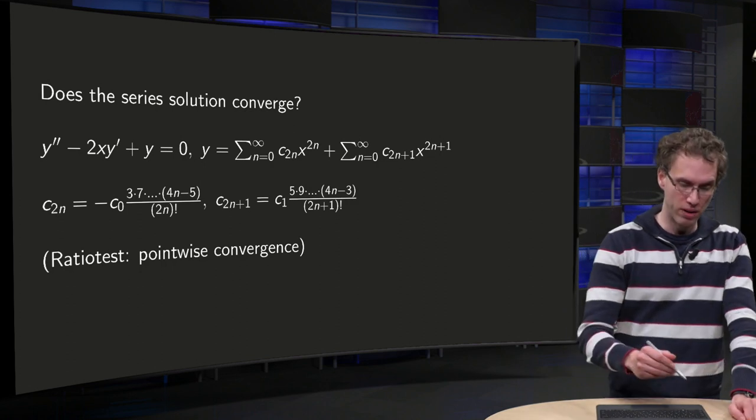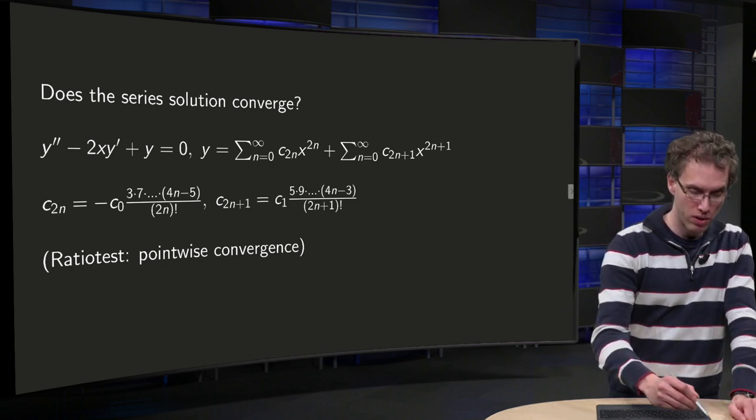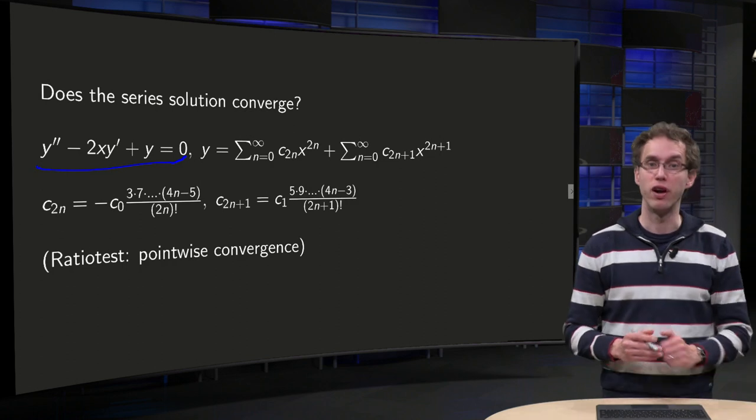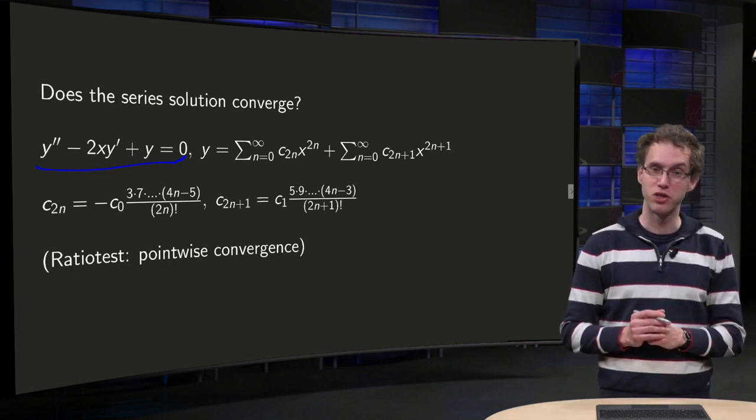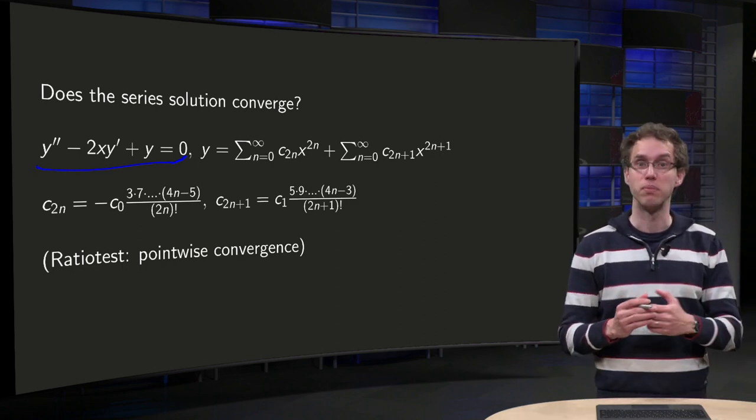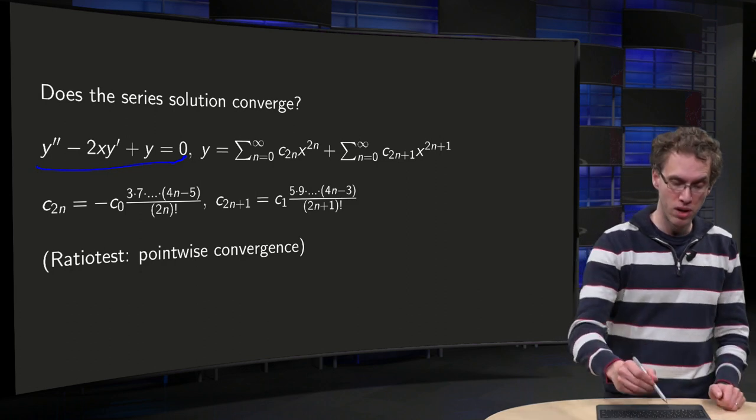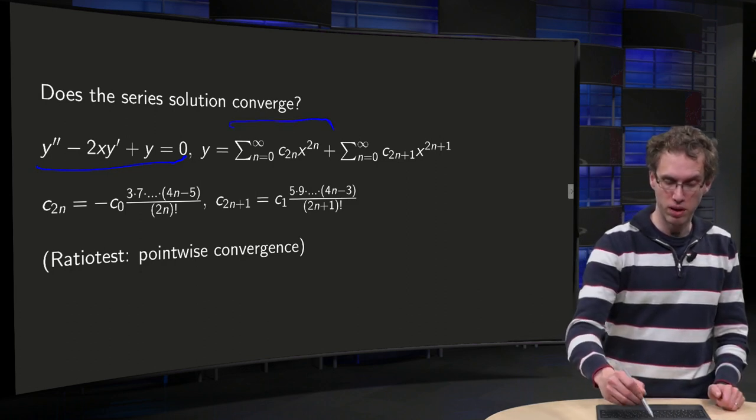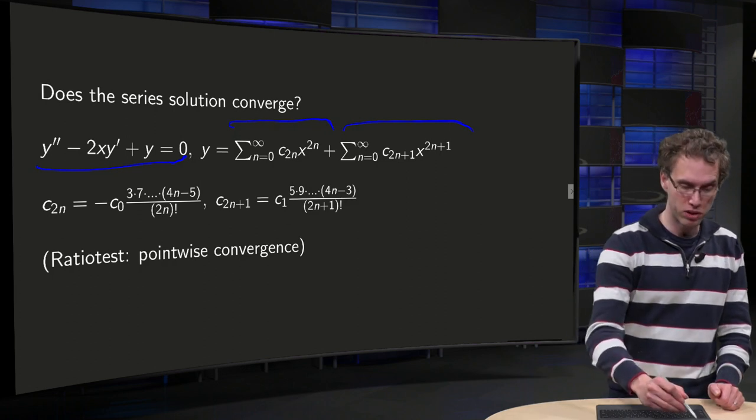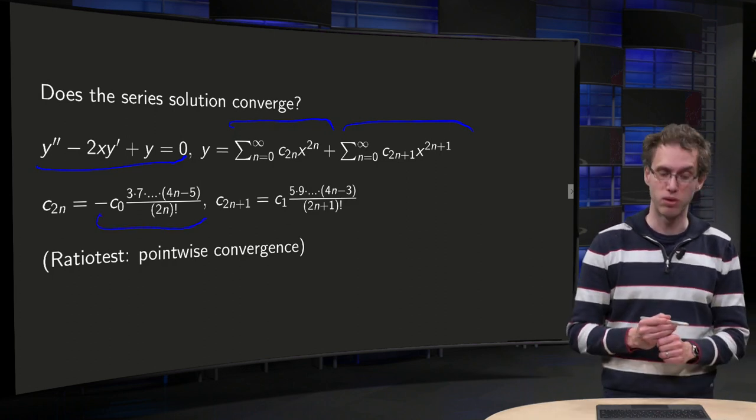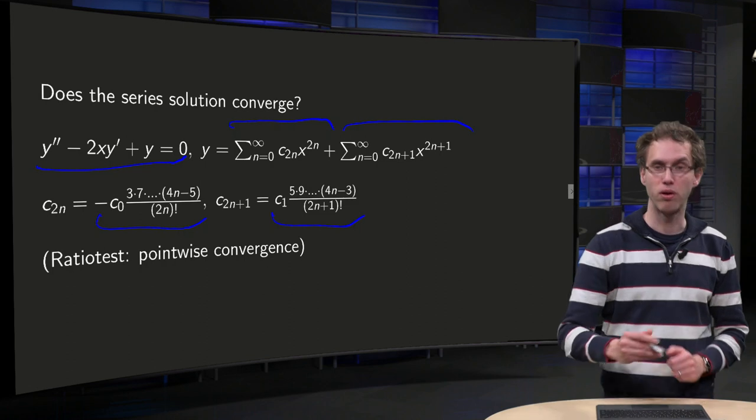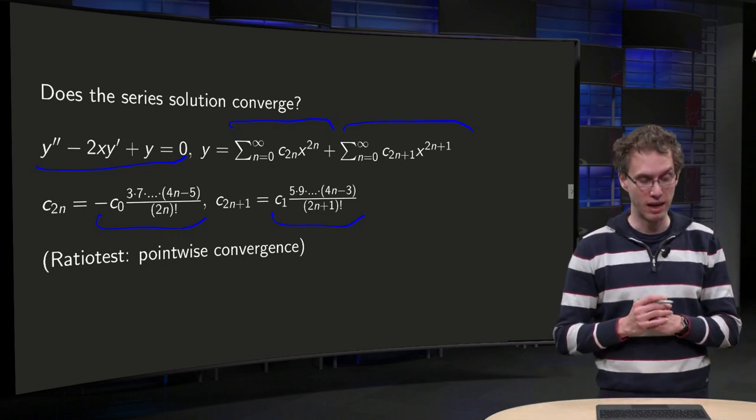So we have the differential equation of an earlier video, y double-prime minus 2x y prime plus y equals 0. We found power series solutions, we had even terms plus odd terms, and the coefficients of the even terms look like this, and the coefficients of the odd terms look like that.